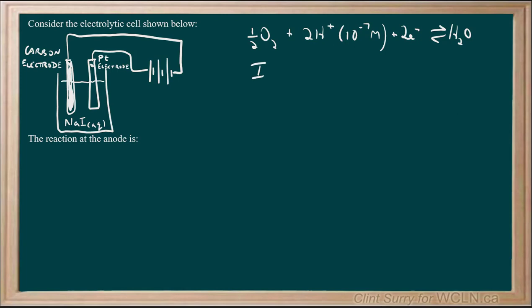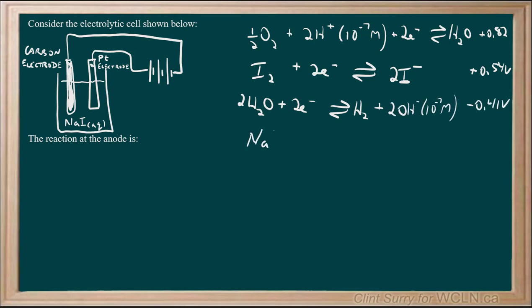Then we have I2 plus 2 electrons giving us 2 iodide ions, and that's at plus 0.54 volts on the redox table. Then we have 2 water at minus 0.41 volts, and we have sodium.